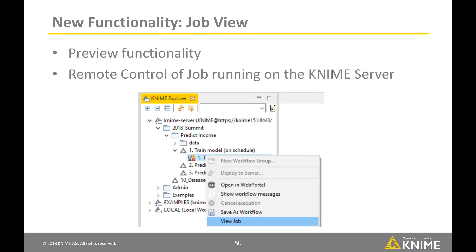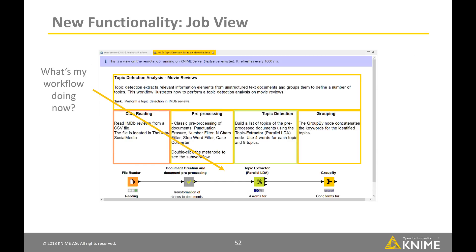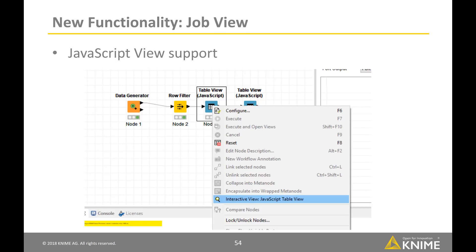Another preview feature is the job view, which allows users to look behind the scenes of a workflow running on KNIME Server — what we call a job. It is already possible to inspect the workflow state including each node's messages, warnings and errors, state and progress; reconfigure nodes and wrap metanodes; visualize data and views; and reset, execute, and cancel nodes. Previously we could only visualize workflows stored on the server open in a temporary copy, but now we can check what a workflow is doing, change configuration settings in the job, and visualize the output of any JavaScript view nodes.